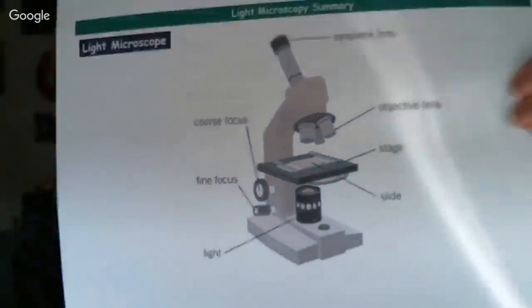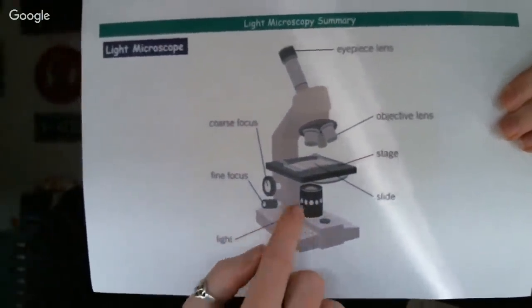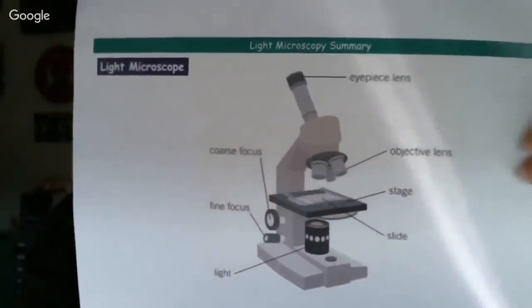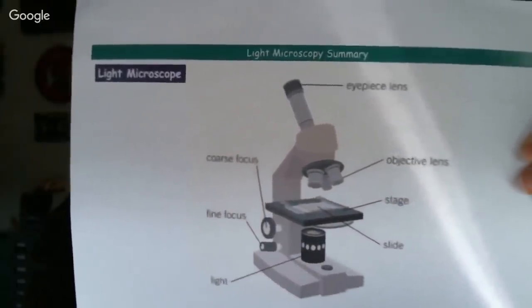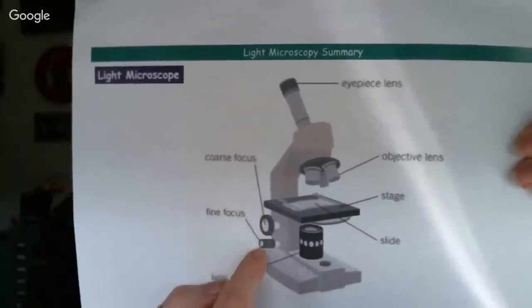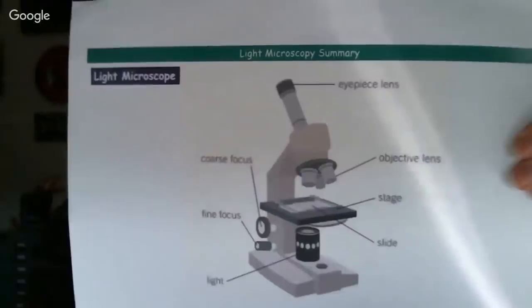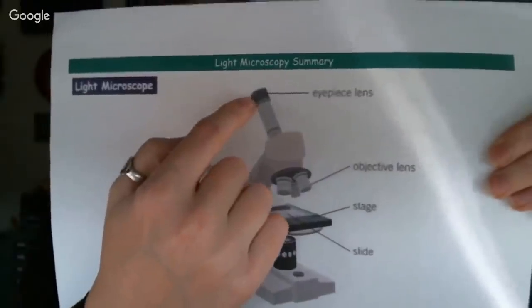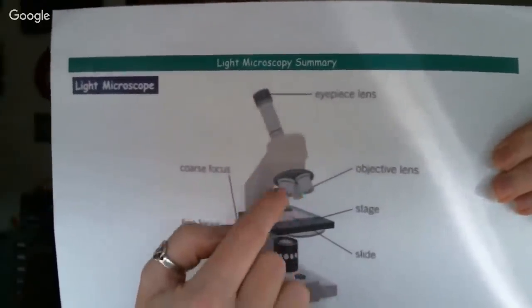The next thing is the light microscope, something you've hopefully had a chance to use in lessons. Key features: at the bottom is the light source. There are two focusing dials — the fine focus and the coarse focus. The stage is the area where we put the slide. And there are two lenses: the eyepiece lens, the one you look through, and the objective lens, which you can twist around to change to different magnifications.